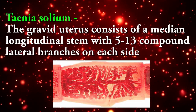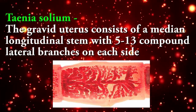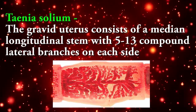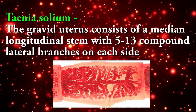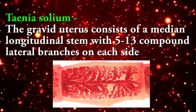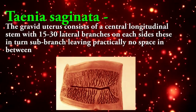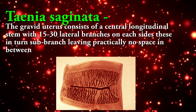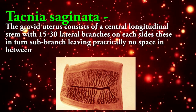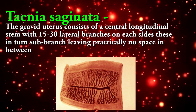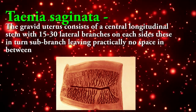Gravid uterus: In Taenia solium, the gravid uterus consists of a median longitudinal stem with 5 to 13 compound lateral branches on each side. In Taenia saginata, the gravid uterus consists of a central longitudinal stem with 15 to 30 lateral branches on each side.